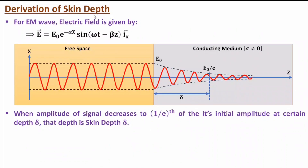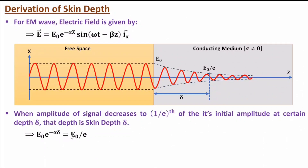To derive the skin depth equation: we set E0 · e^(−α·δ) = E0/e. The E0 cancels, giving e^(−α·δ) = e^(−1). Taking the natural log of both sides, we get delta = 1/alpha. So skin depth is the reciprocal of the attenuation constant.